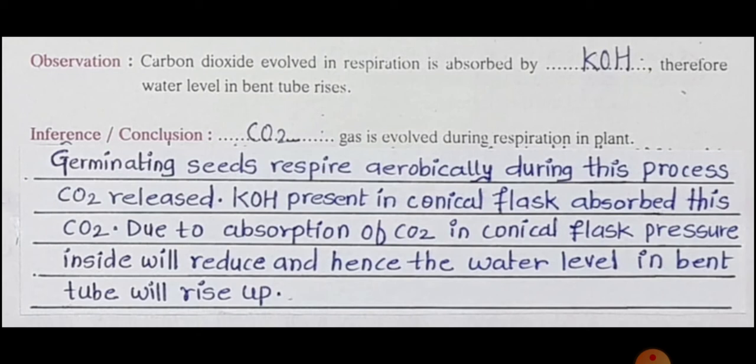The potassium hydroxide absorbs the carbon dioxide which is released during the respiration process. Due to this, when carbon dioxide is absorbed, there will be a low pressure built in the conical flask, and due to that reducing pressure, the water level in the bent tube will rise slowly. This proves that carbon dioxide is evolved in the process of respiration.